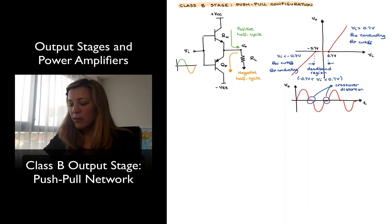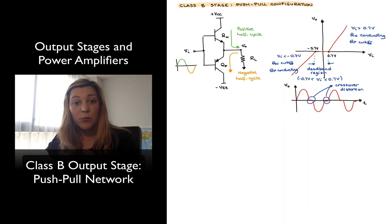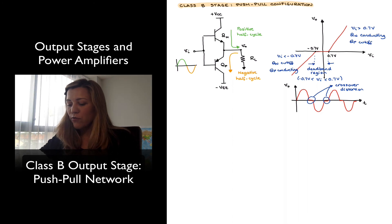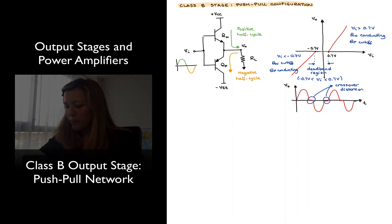But for now, let's examine the Class B configuration in a little bit more detail. Let's go ahead and do some power calculations to see how it compares in terms of power efficiency to the Class A output stage. We can see already in terms of linearity it's going to be less linear than the Class A output stage because of the crossover distortion problem.